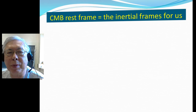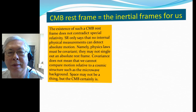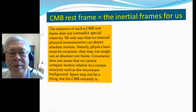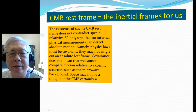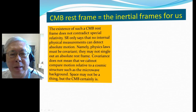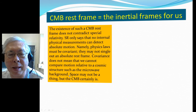So the CMB rest frame is the inertial frame for us. The existence of such a CMB rest frame does not contradict special relativity. Special relativity only says no internal physics measurement can detect absolute motion — namely, the physics laws must be covariant and may not single out any absolute rest frame. And covariance does not mean that we cannot compare motion relative to cosmic structure such as the microwave background.